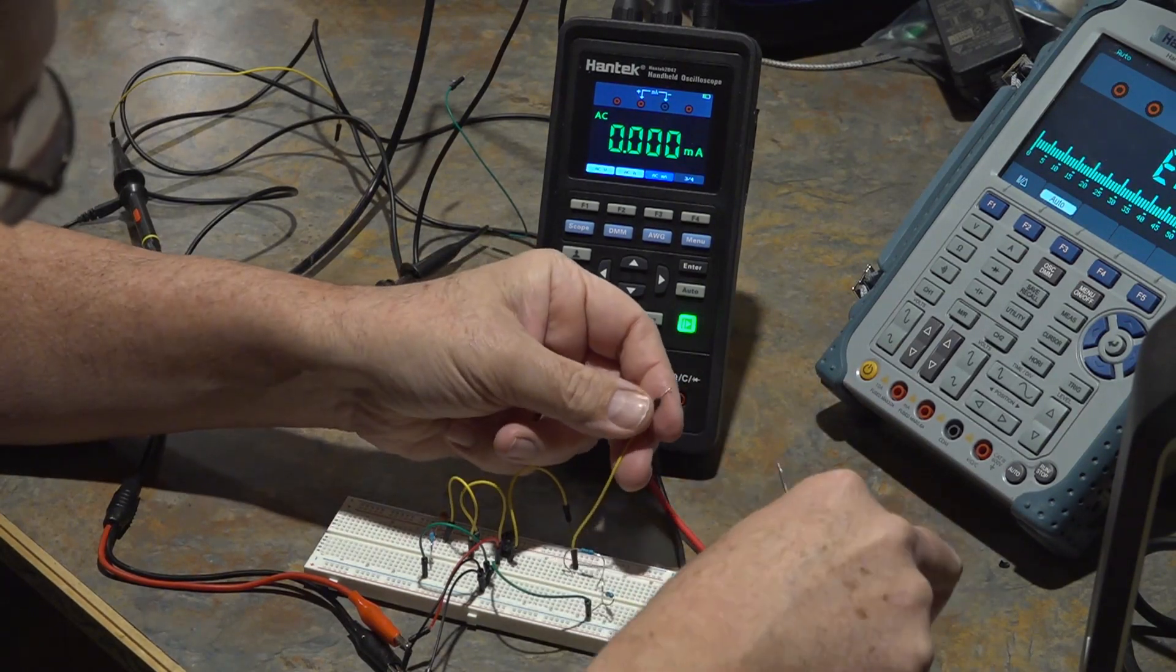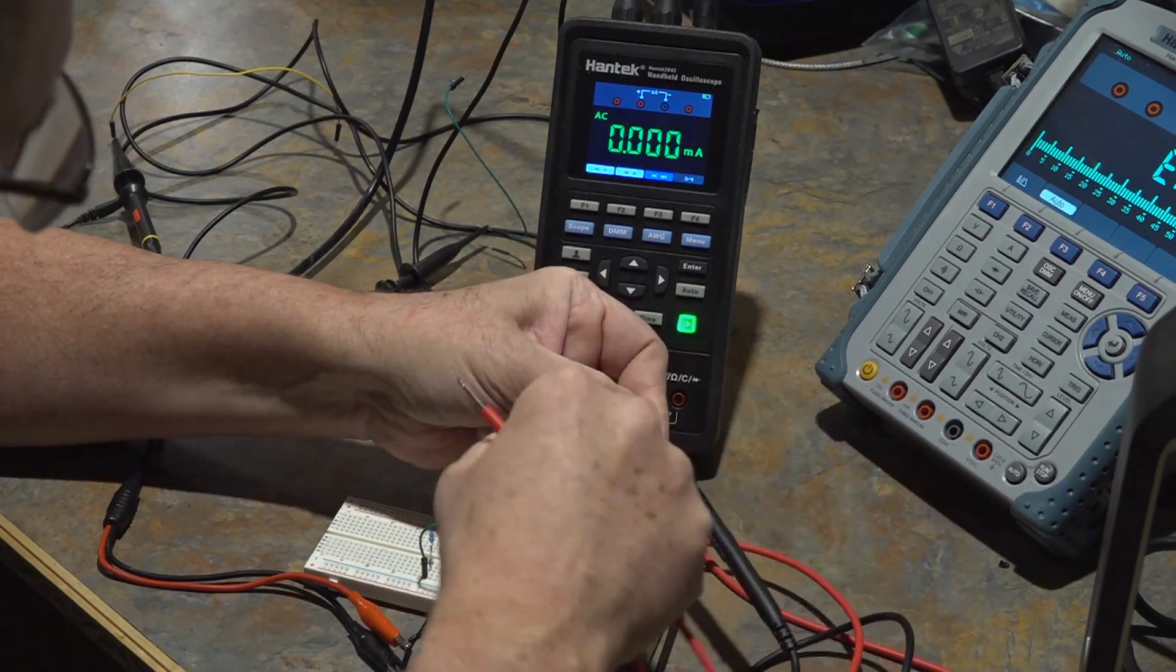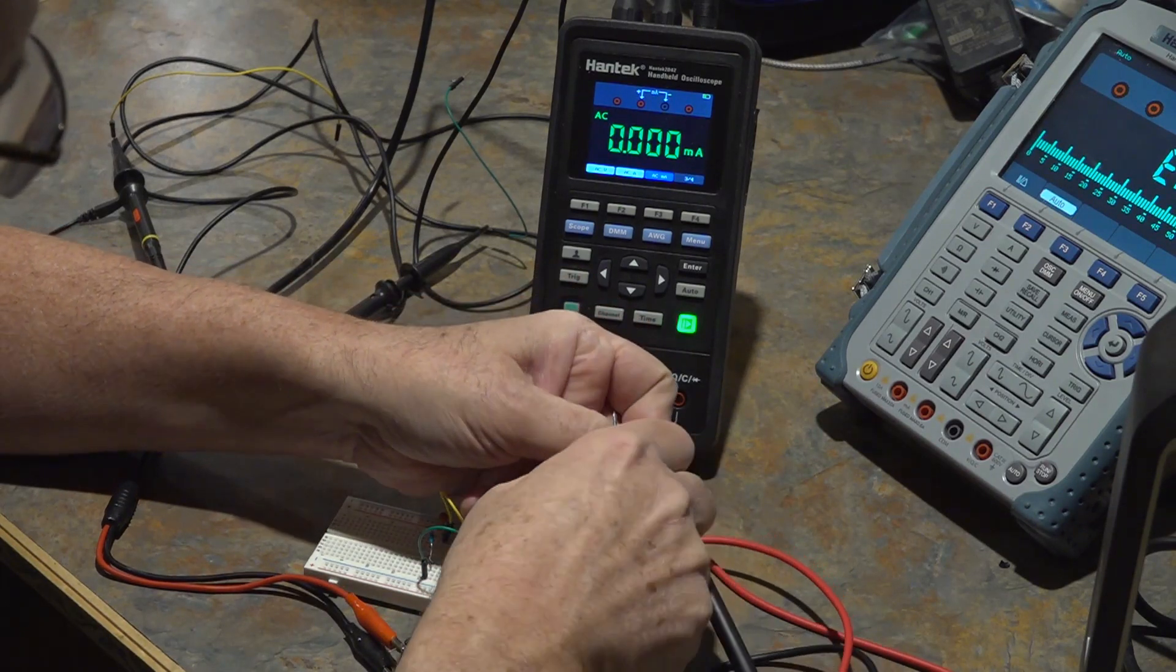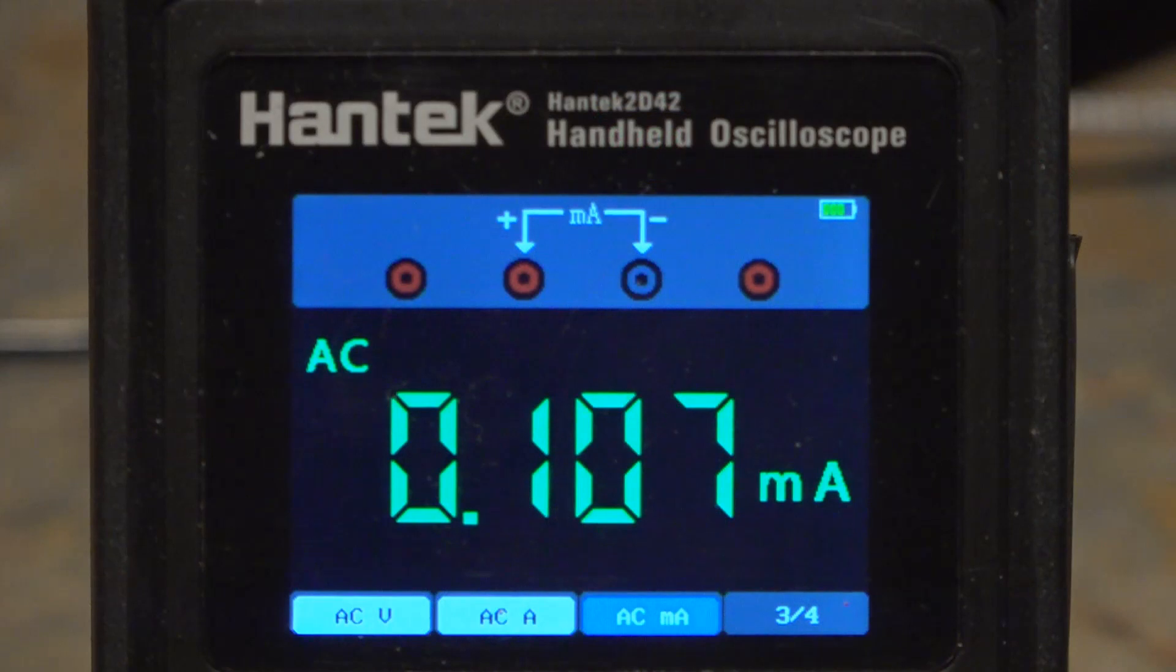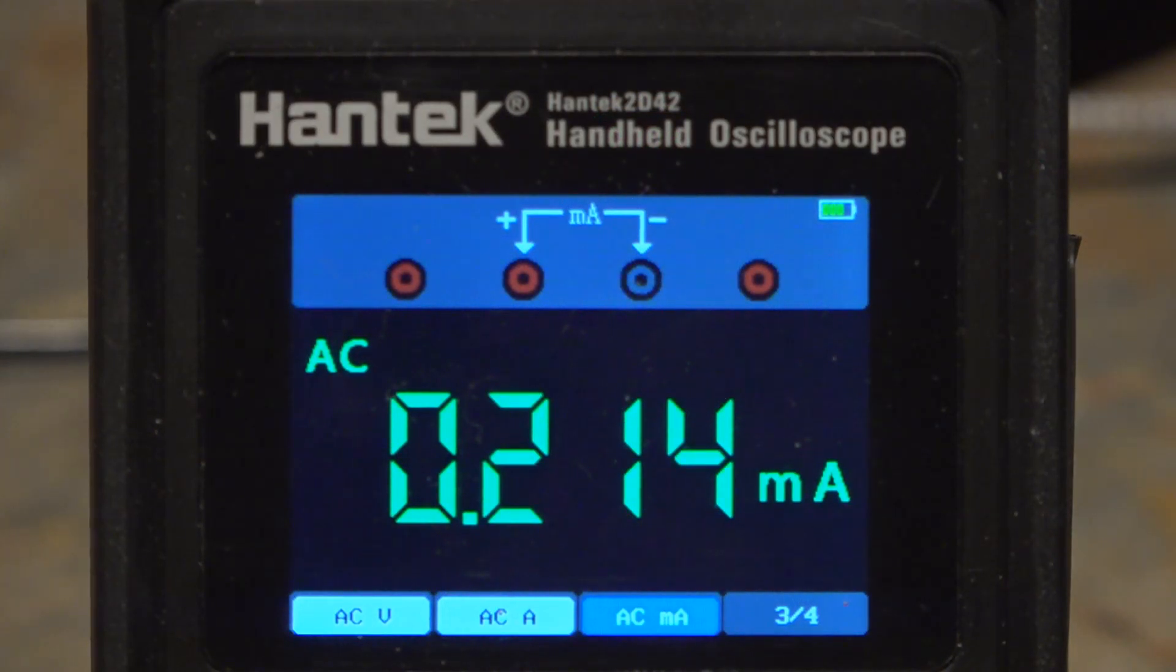Make sure that I hook up the plus closest to the signal source. There's the ground and the plus. I'm looking at 0.214 milliamps. There's that current reading, that's the choke reading.